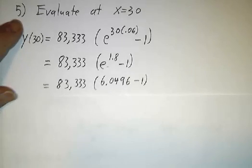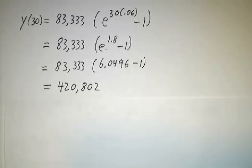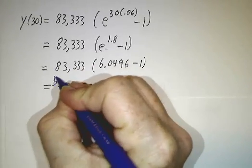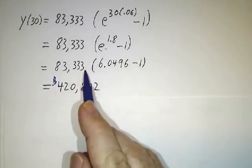And then you pull out a calculator, do a little bit of arithmetic, and you discover that at the end of 30 years, you will have $420,802, and that's ignoring the 33 cents that we threw away.